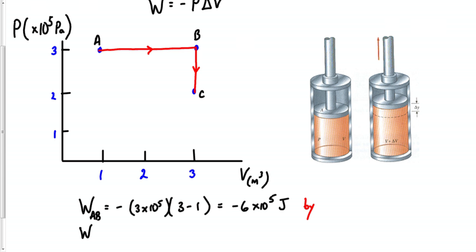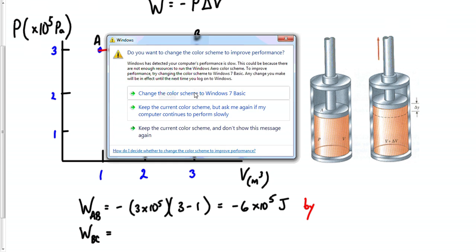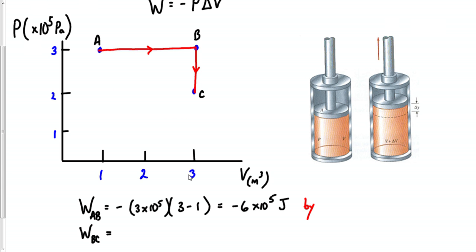Then we can find work B to C, and this is how a lot of these problems look. In the case of B to C, the first thing I notice is: what would my change in volume be from B to C? My volume at point B is 3, and my volume at point C is also 3. So the change in volume from B to C is 0, and since the volume change was 0, the work from B to C is also 0.